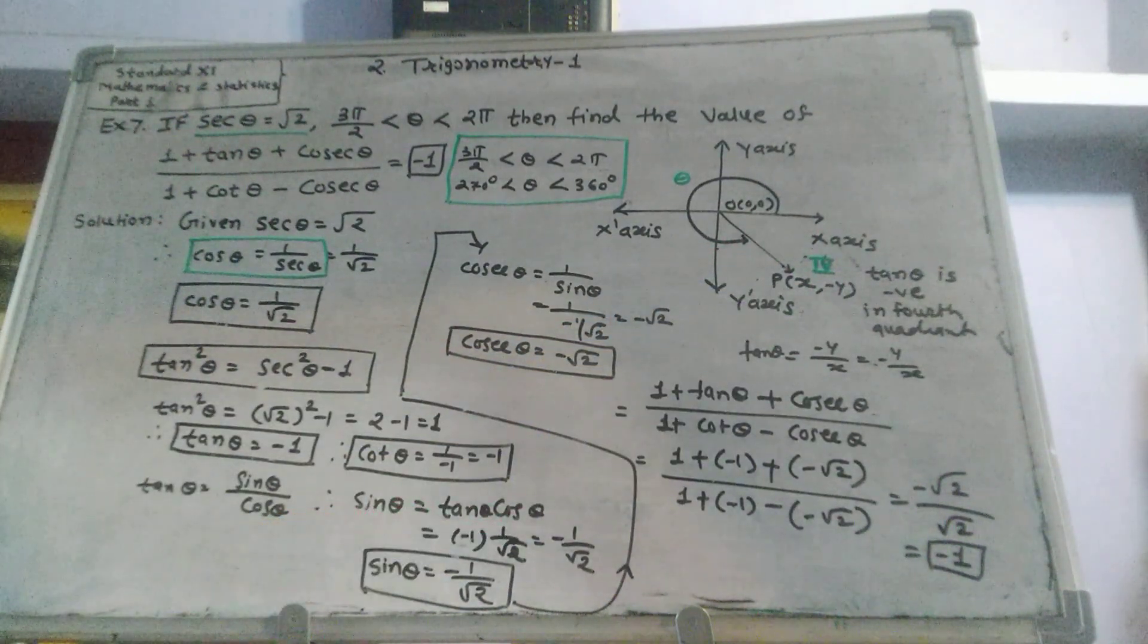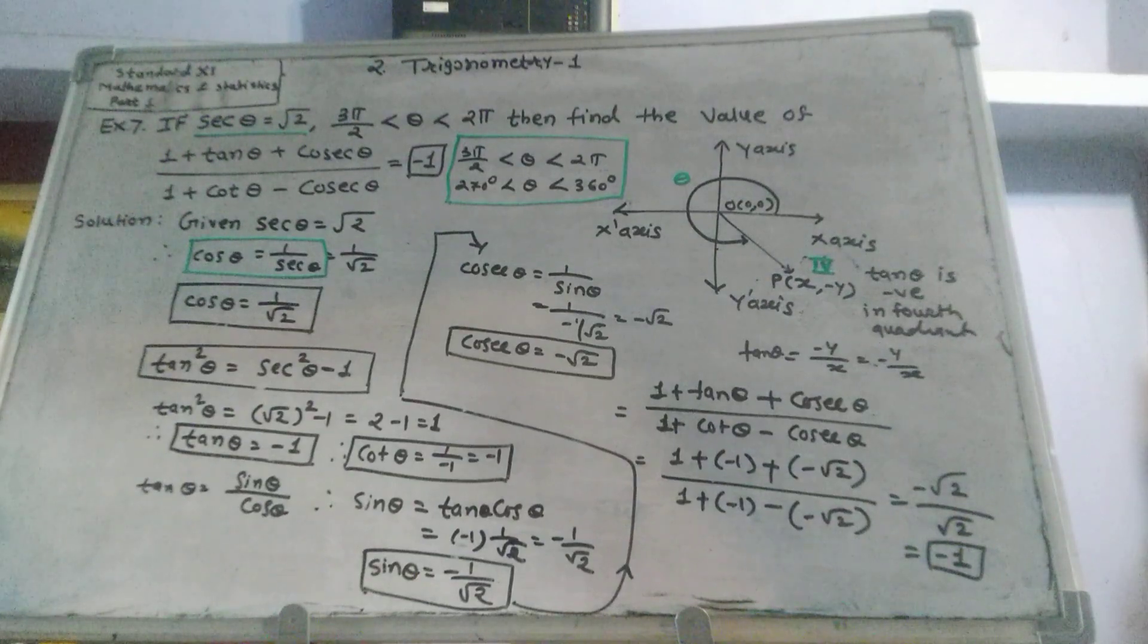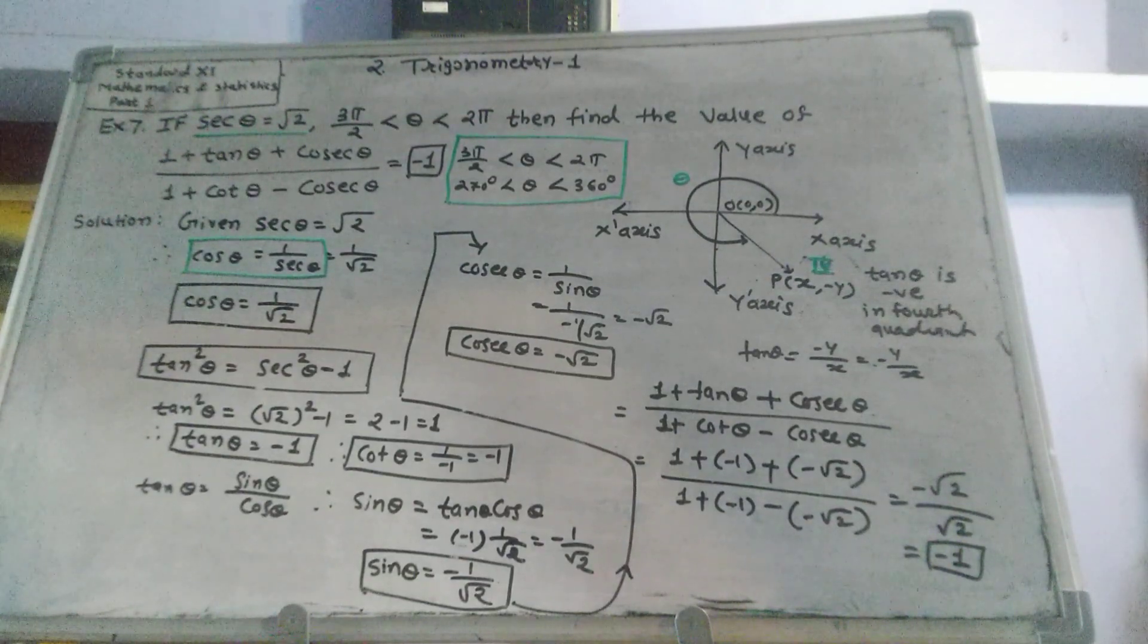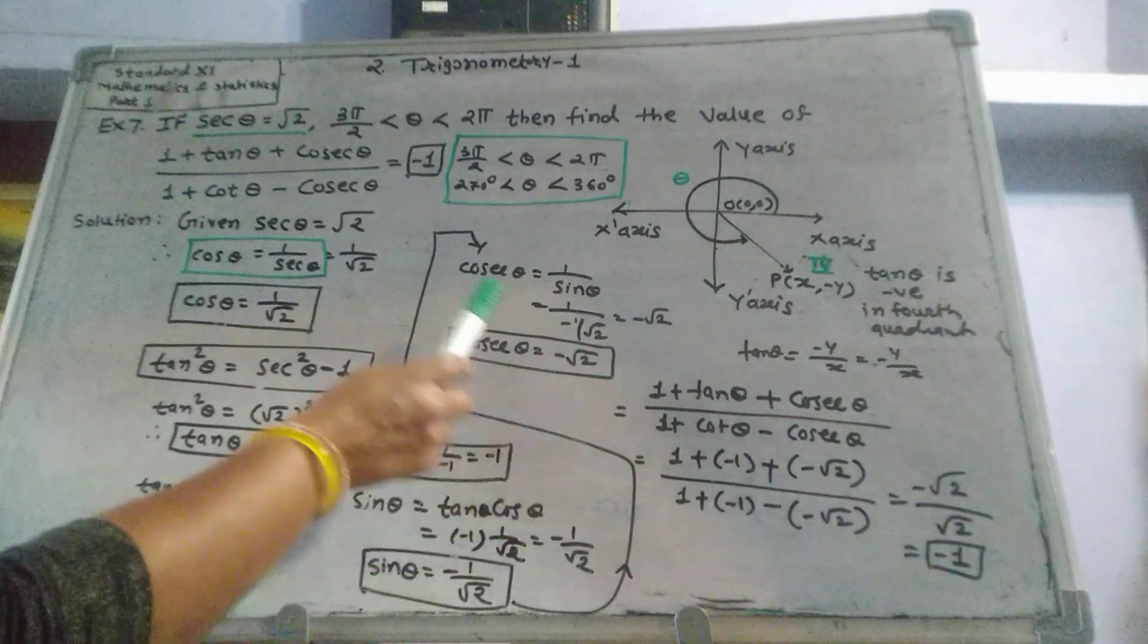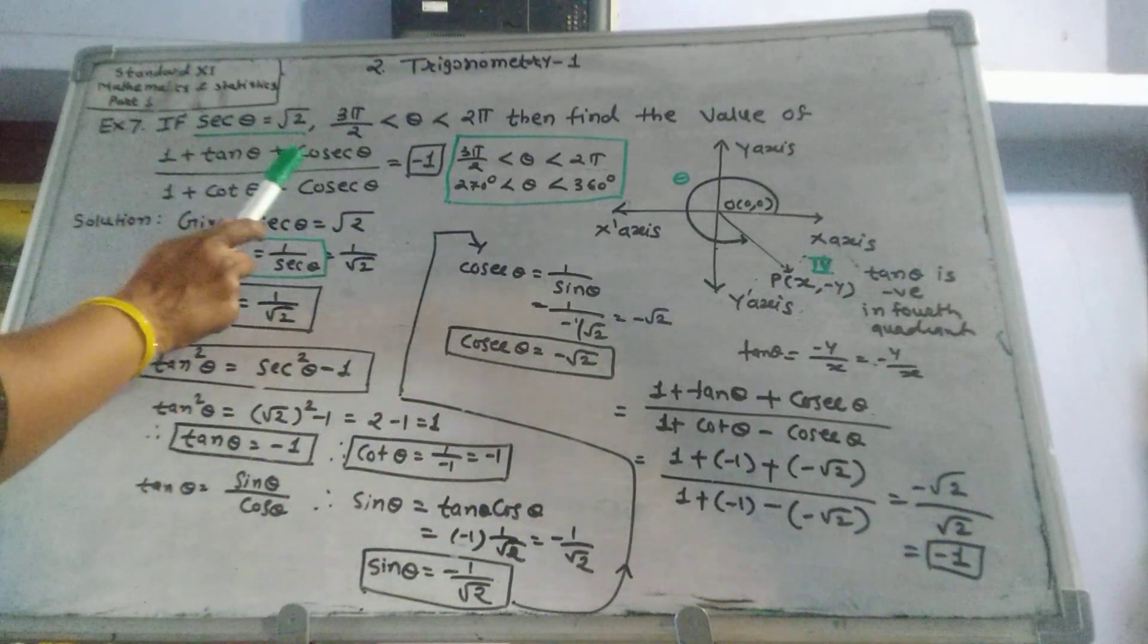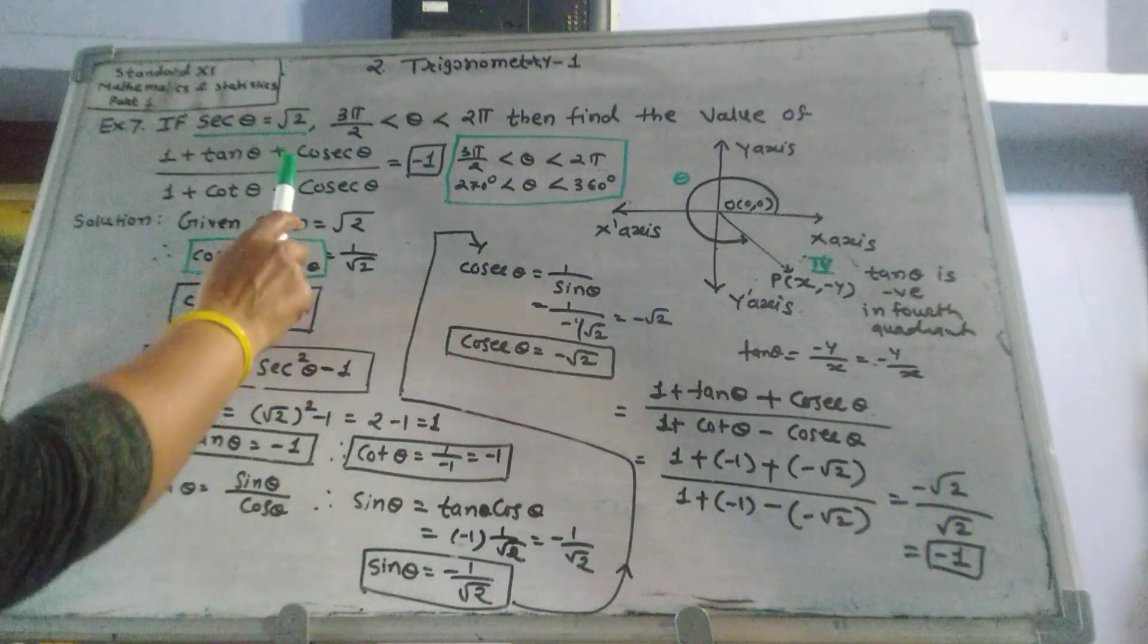Sin theta equals tan theta into cos theta, which is negative 1 upon root 2. Cosec theta equals negative root 2. Put the values of tan theta, cosec theta, and cot theta in this expression.